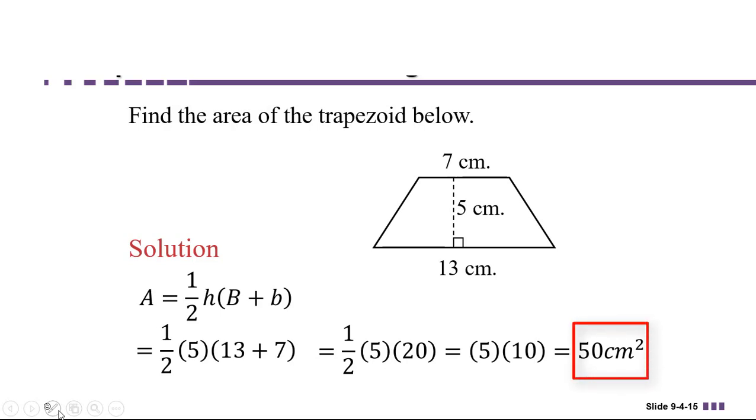And 5 times 10 is 50. And then we have to mark our units correctly. Remember, we're finding area, which is square units. So in this case, centimeters squared, 50 cm².